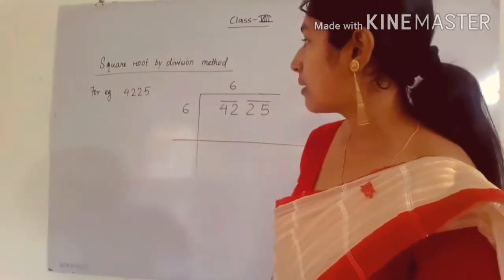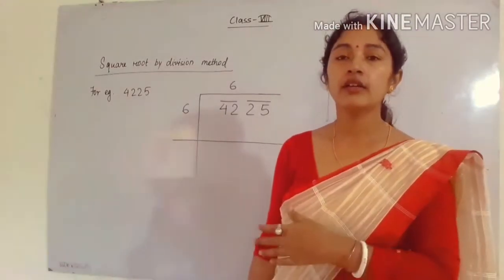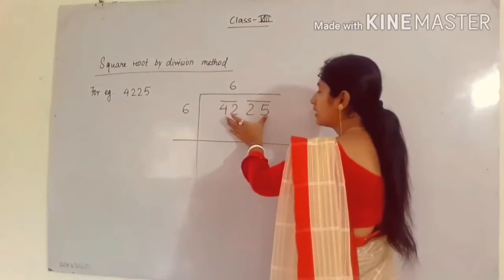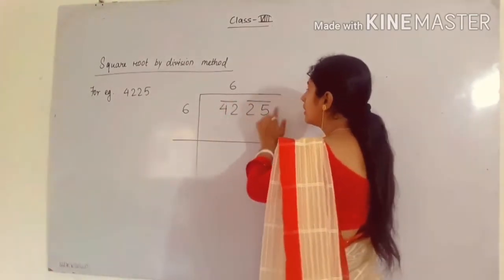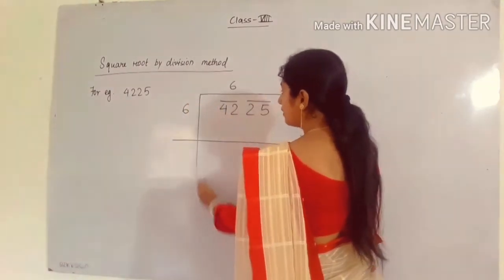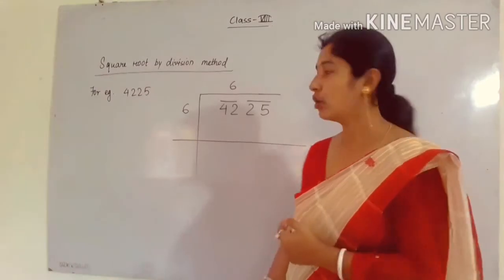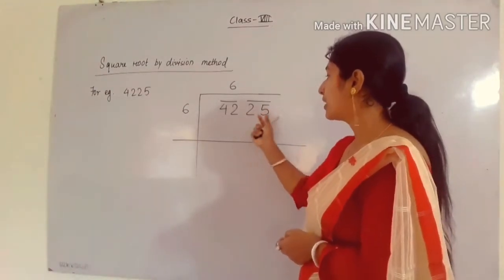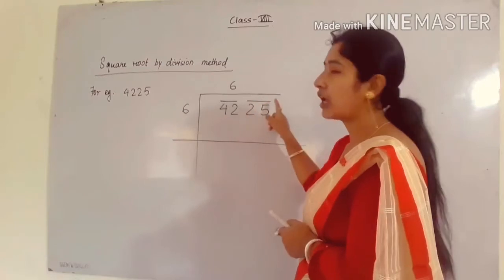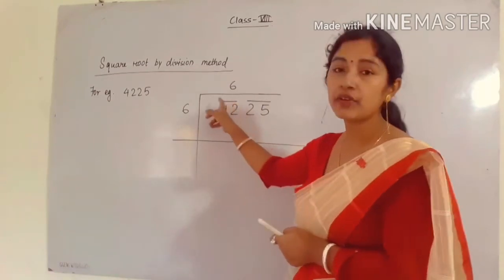I have taken one example: 4,225. I am going to find the square root of this number. First of all you have to write the number, that is 4,225, then make a line above it and a vertical line. After that, you have to pair the numbers from the back side. So the first pair from the back is 25 — make a bar above it. Next is 42 — again make a bar above this number.